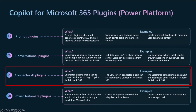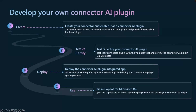What are connector AI plugins? They are basically an extra setting inside of custom connectors that you can enable, and then you can certify that as a connector AI plugin, which will be available inside of Copilot for Microsoft 365. For example, the ServiceNow connector has a connector AI plugin that can list incidents in ServiceNow via Copilot for Microsoft 365. The Salesforce connector also has a connector AI plugin that can list and filter leads within Copilot Studio.